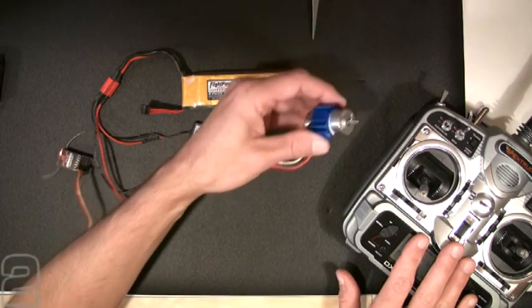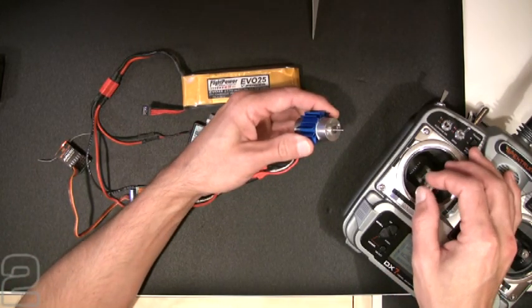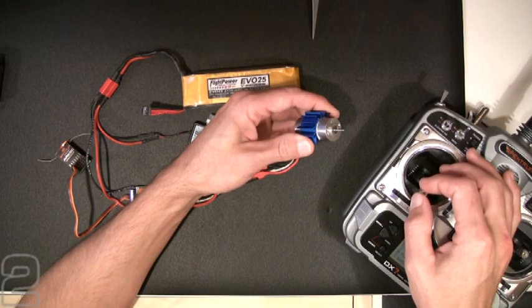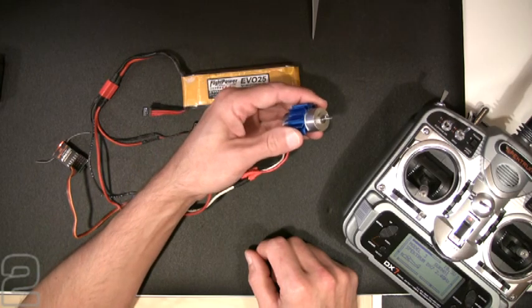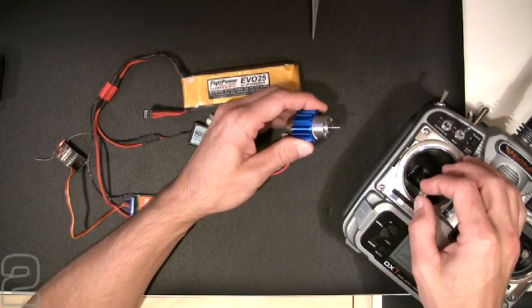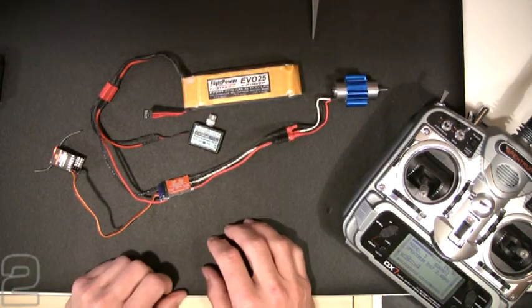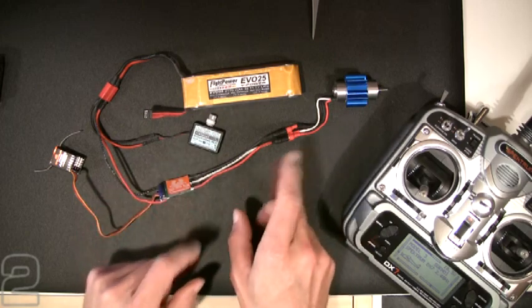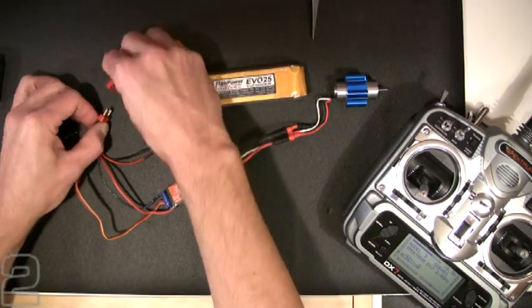Our throttle channel should be active - there it is, our motor's spinning up. You don't want to dry run your brushless motors extensively on the bench. Just verify that you have a little activity and throttle response. That's a basic connection. Let's power everything down - disconnect your flight battery first so the whole system's dead, then turn off your transmitter.